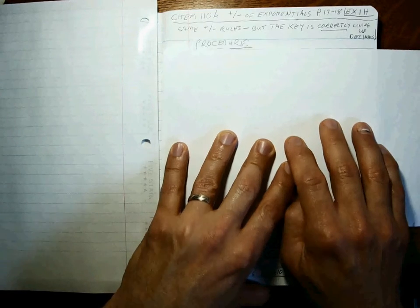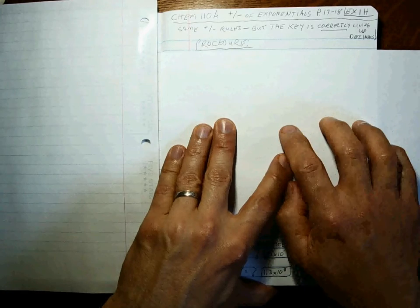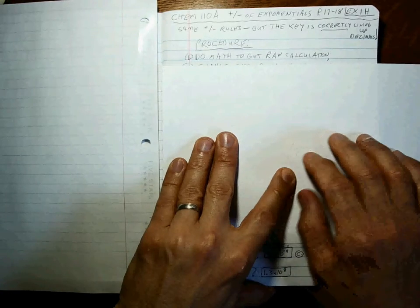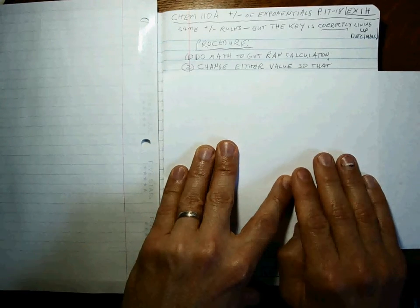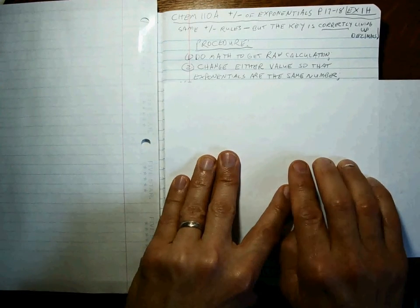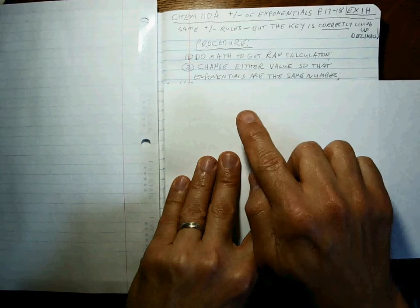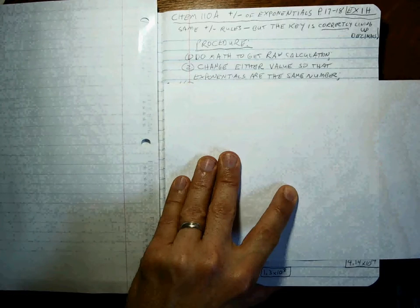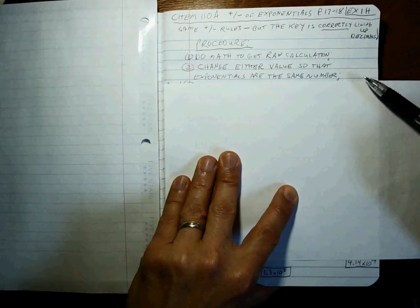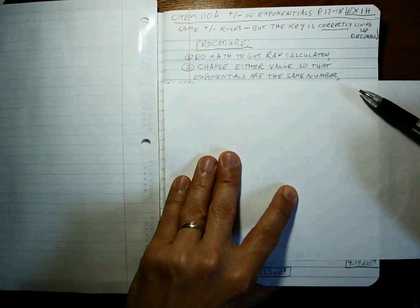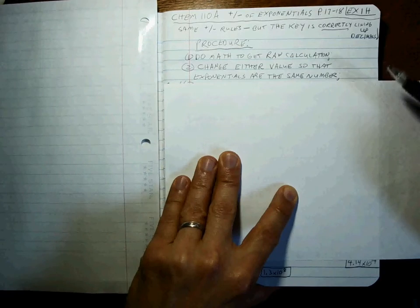Same deal here. So your procedure for doing addition and subtraction of exponentials is to do the math and get the raw calculation done first. That will be your check. Then you change either value that you get started with so that the exponentials are the same number. And it can be either one, just like we figured out the cents, 105 cents, or the dollars, $1.05.